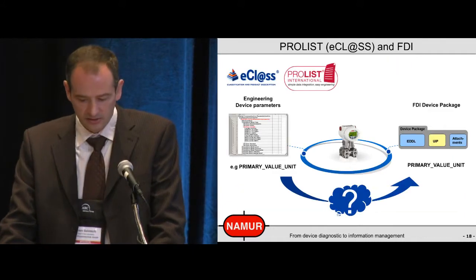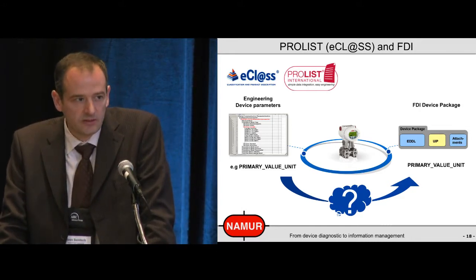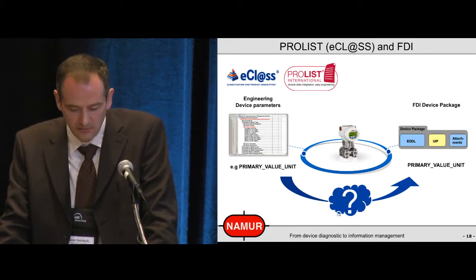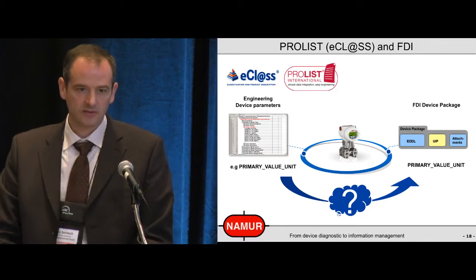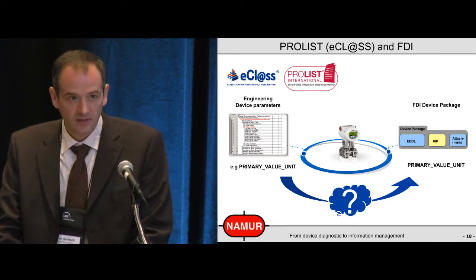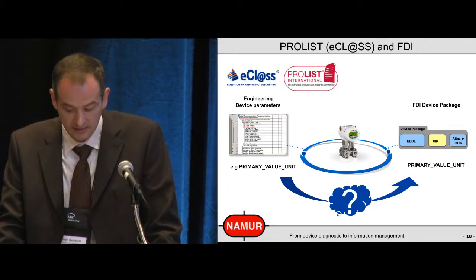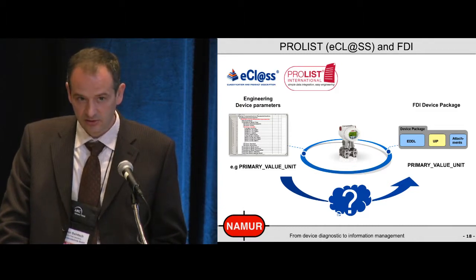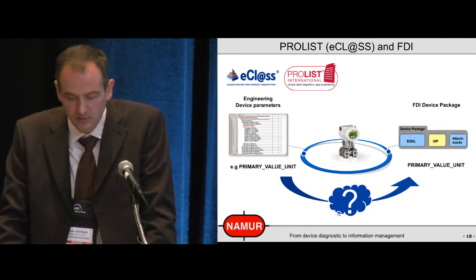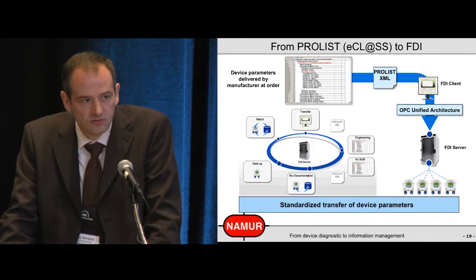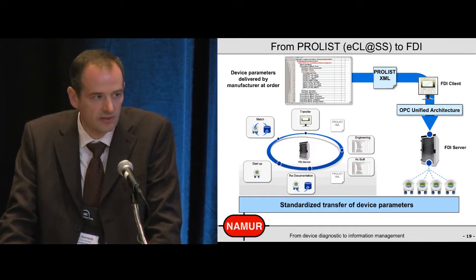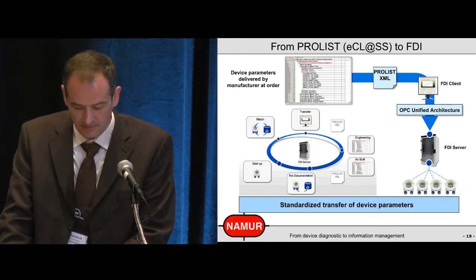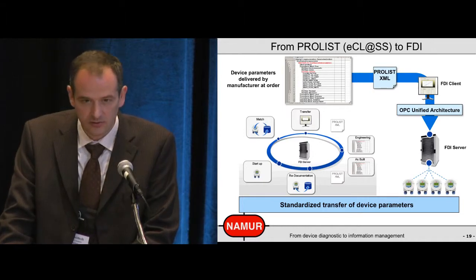Another feature is electronic data sheets — ECLASS ProLists — where you can use your preconfigured engineering parameters. You must bring them into the device. They are provided by the vendor on one side, and then you must transport them to the device package and afterwards into the device — that was very hard work to do by hand in the past. But with OPC UA it is possible to transfer the electronic data sheets directly via a ProList XML data sheet to an FDI client, and then through the OPC UA interface into the server and then into the device. So you have a fully automated engineering process, and that this really works will be demonstrated in March at a trade show in Düsseldorf.